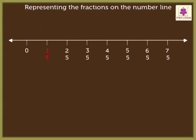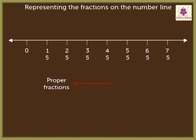Annie is representing the fractions on the number line. Here, one upon five, two upon five, three upon five, and four upon five are proper fractions, as these fractions have a numerator that is less than the denominator. And five upon five, six upon five, and seven upon five are improper fractions, as these fractions have a numerator that is equal to or greater than the denominator.